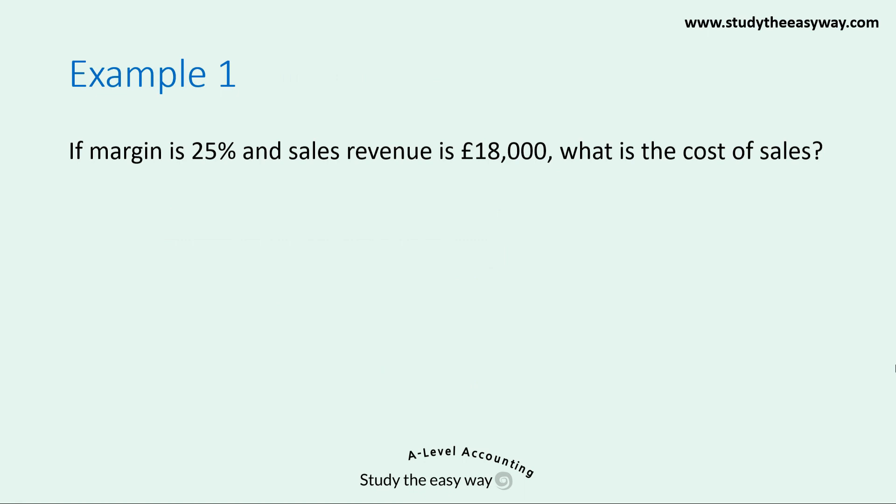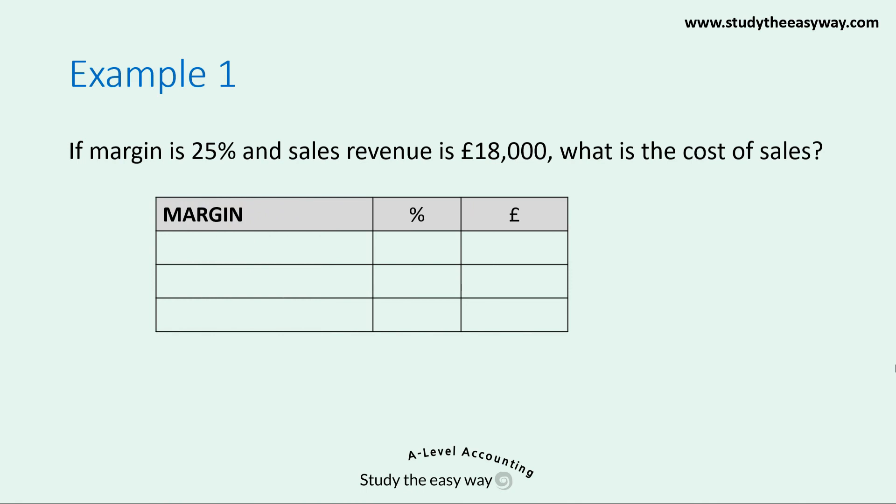Example one. If margin is 25% and sales revenue is £18,000, what is the cost of sales? This is really typical in incomplete records questions. There's a tried and tested method I'm going to show you here, which will help you to get the right answer every time. The first thing to notice is that this is a gross profit margin question, which is really important to identify because it tells us which order to write down the figures in our table.